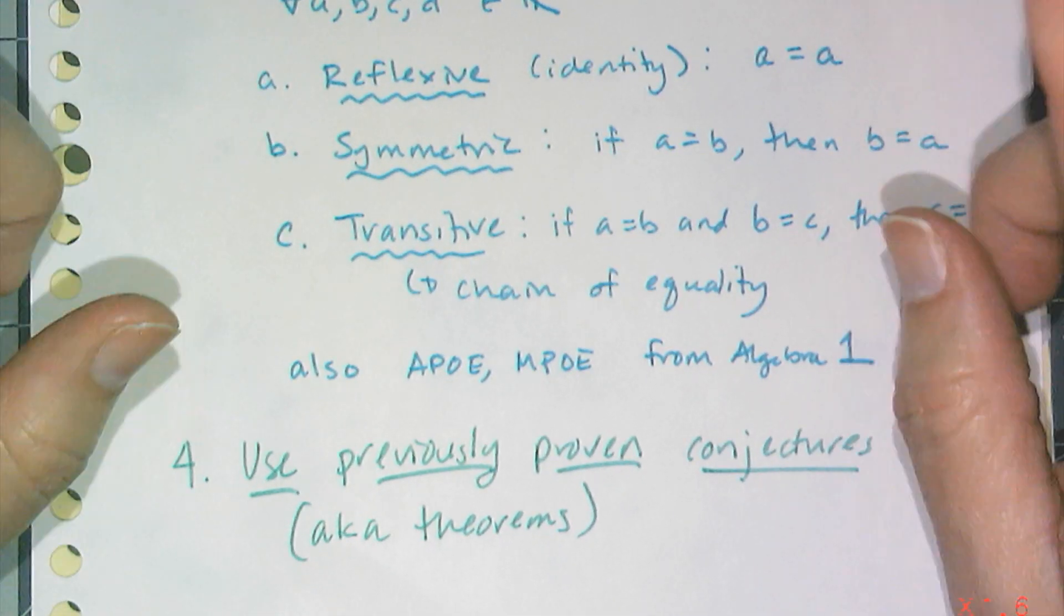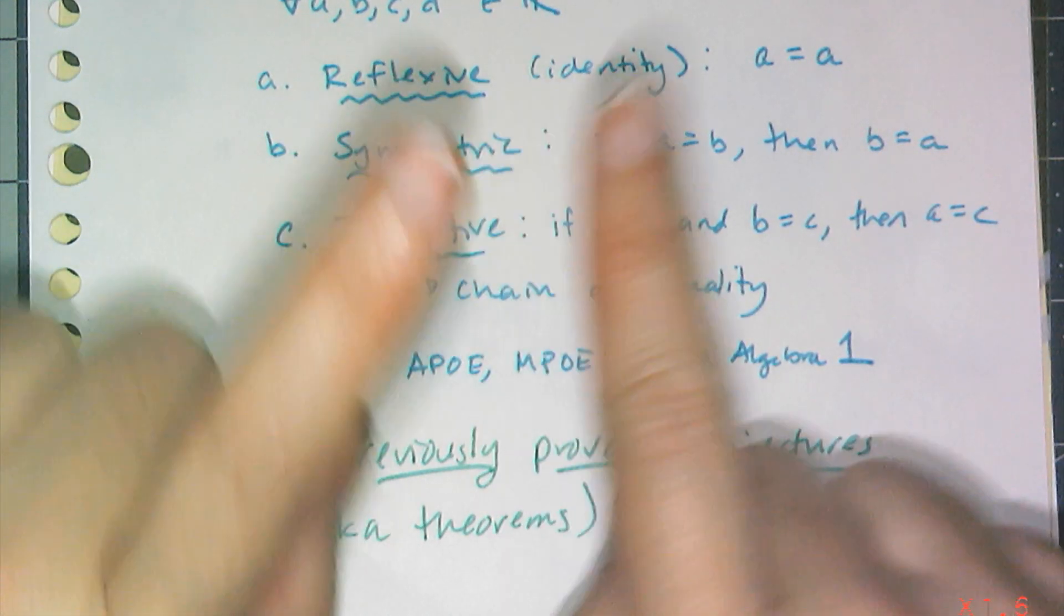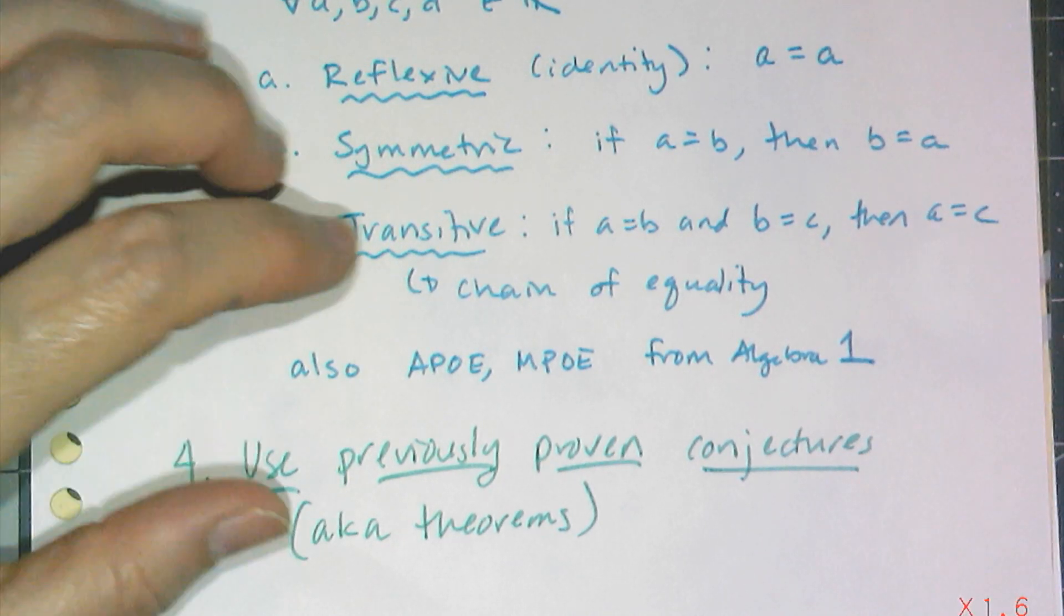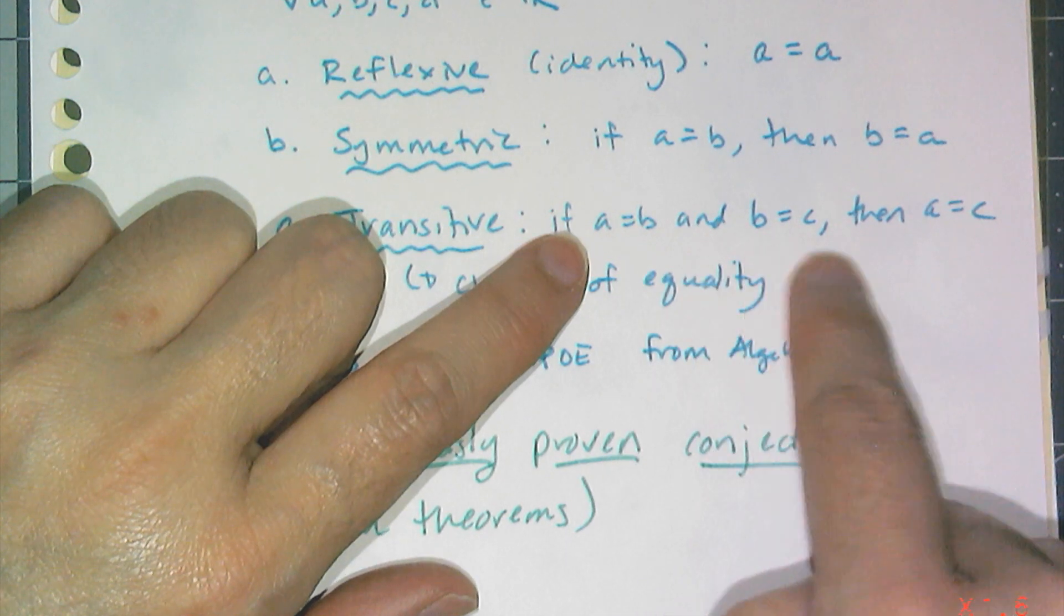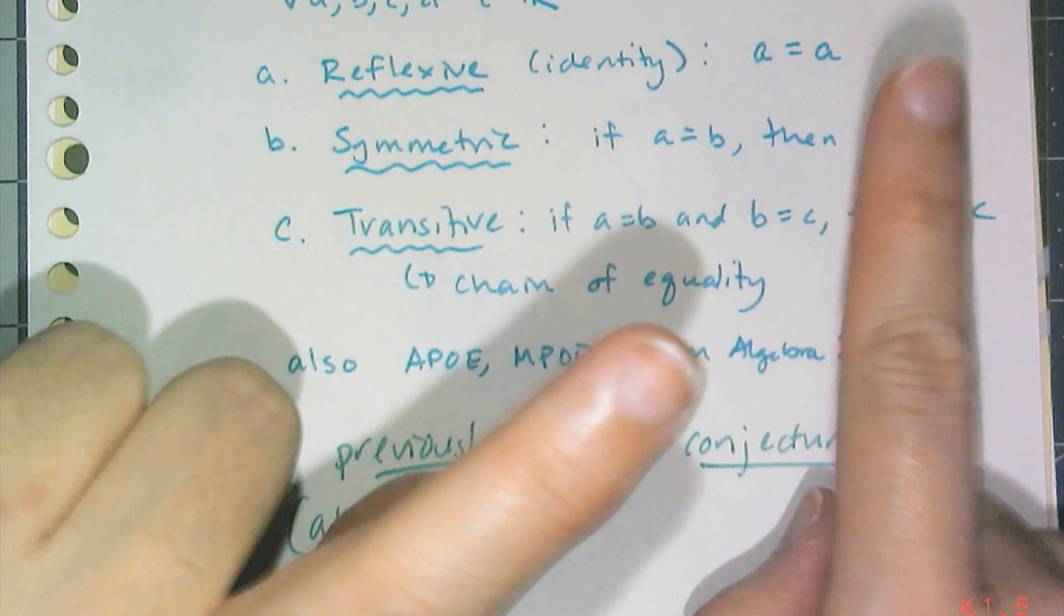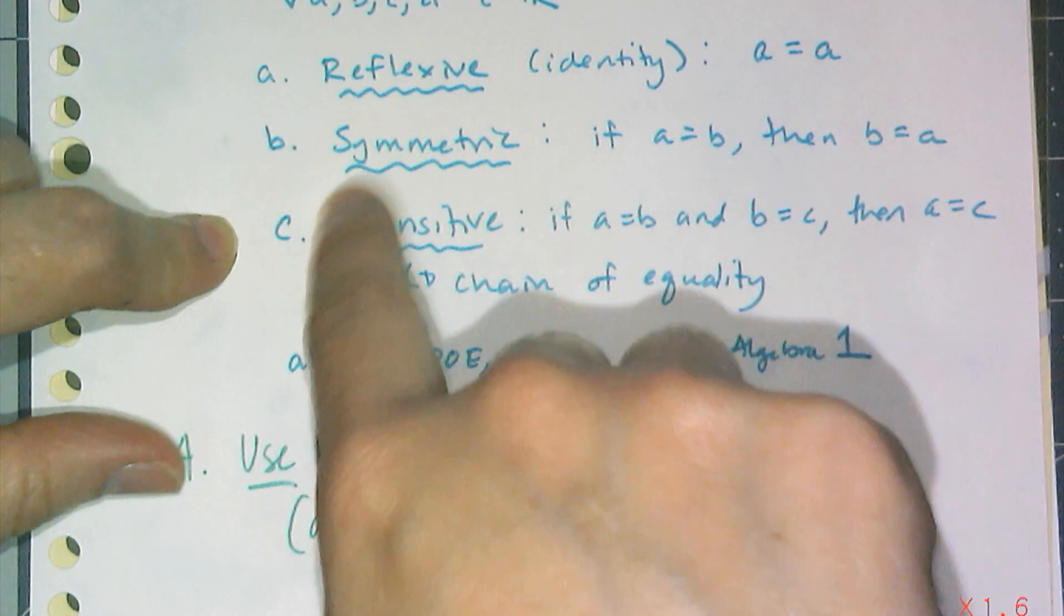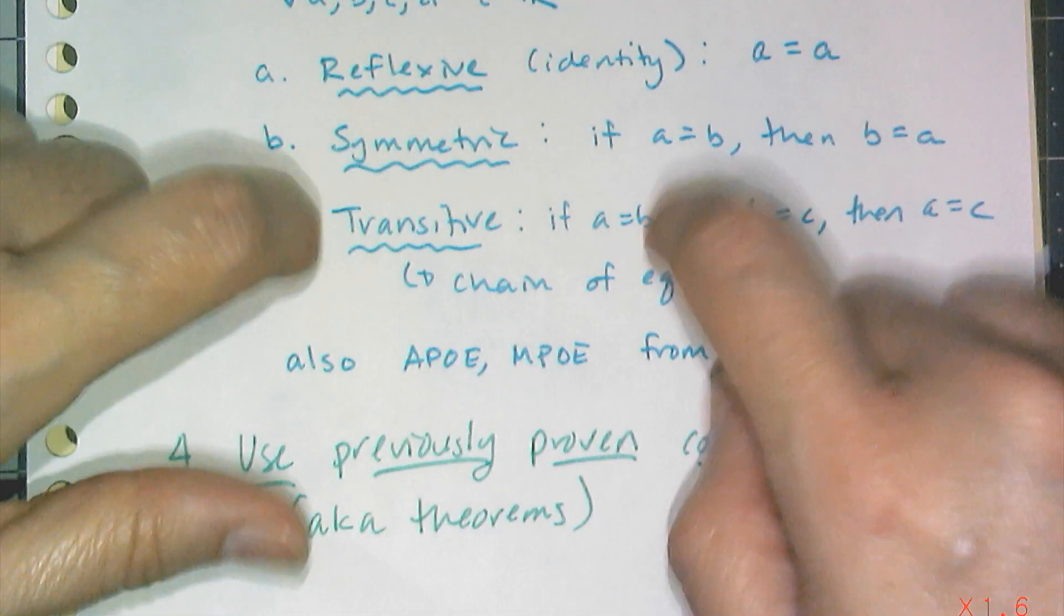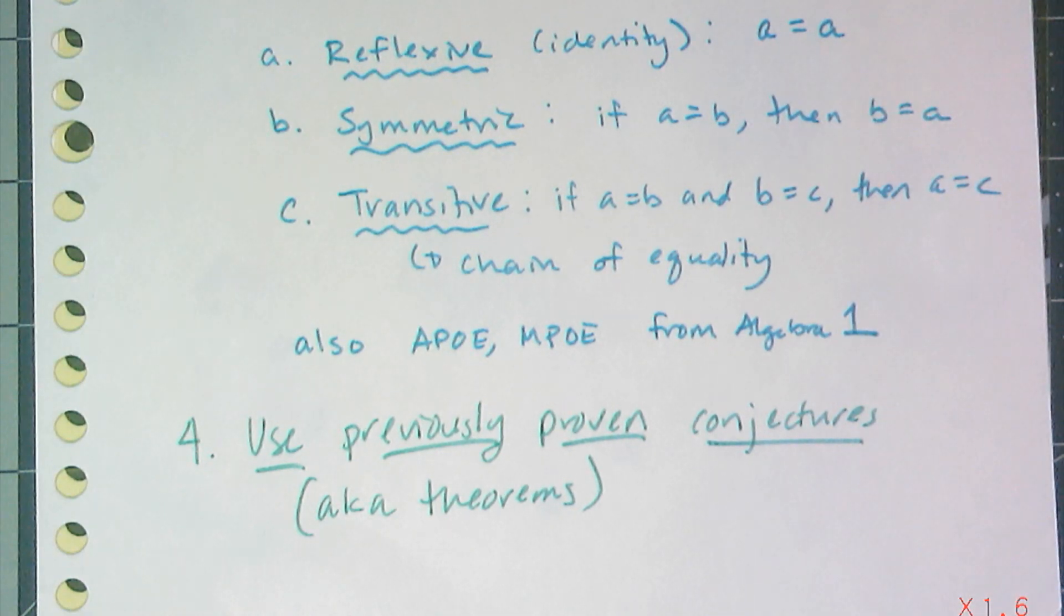And then the fun one is a transitive property, which allows you to create a chain of equality or congruence. This is the fun one. And you're going to use this one more often in geometry. If A equals B and B equals C, then A has to equal C. It creates that chain of equality. Transitive. Put like a little highlighter on this one, like star it or something. Whenever you need to connect some chains, transitive is what you want. And so we can always use these to help us prove things.